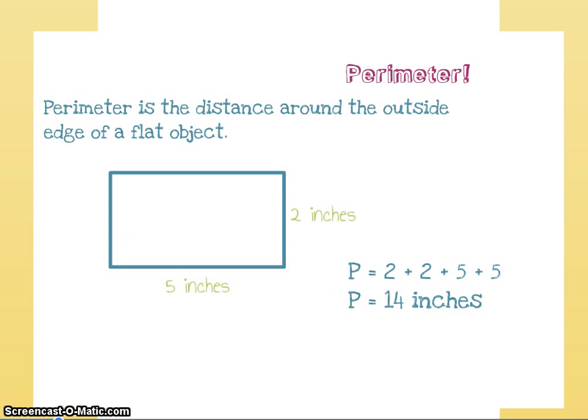The first thing that we're going to talk about is perimeter. Perimeter is simply the distance around the outside edge of a flat object.